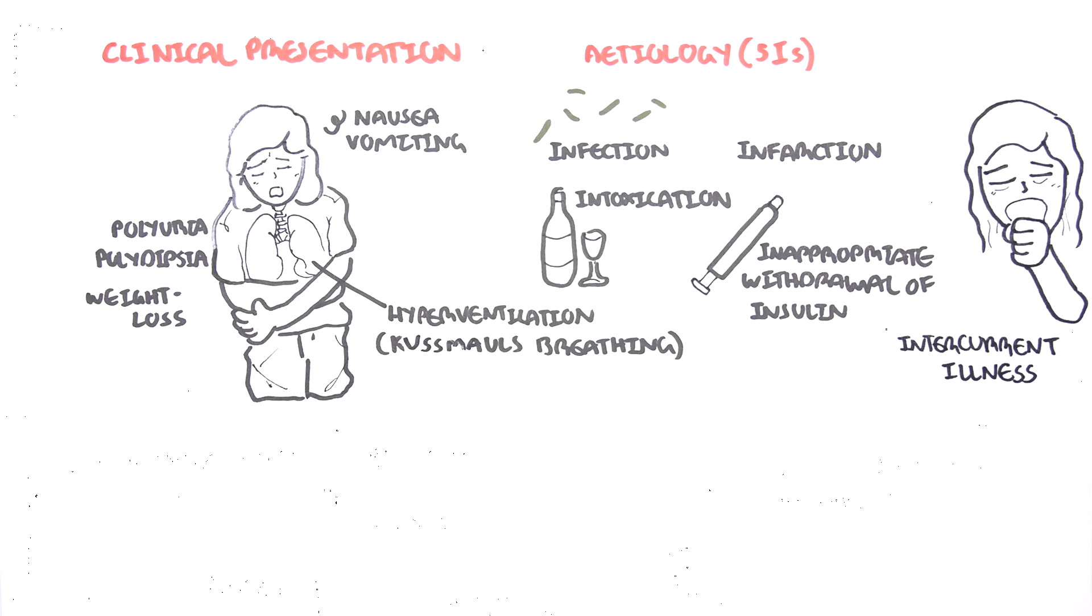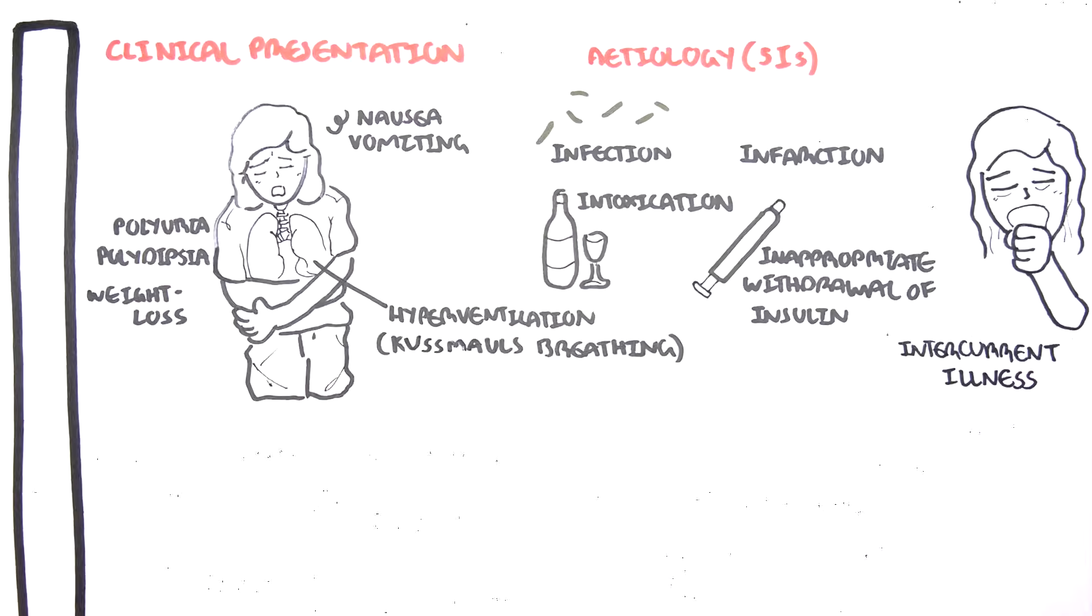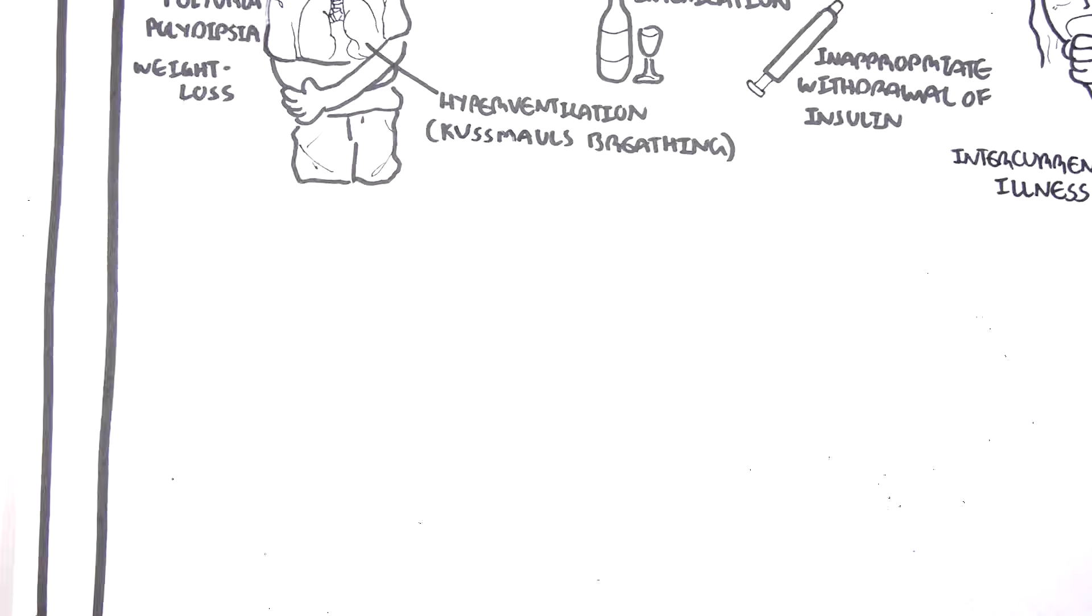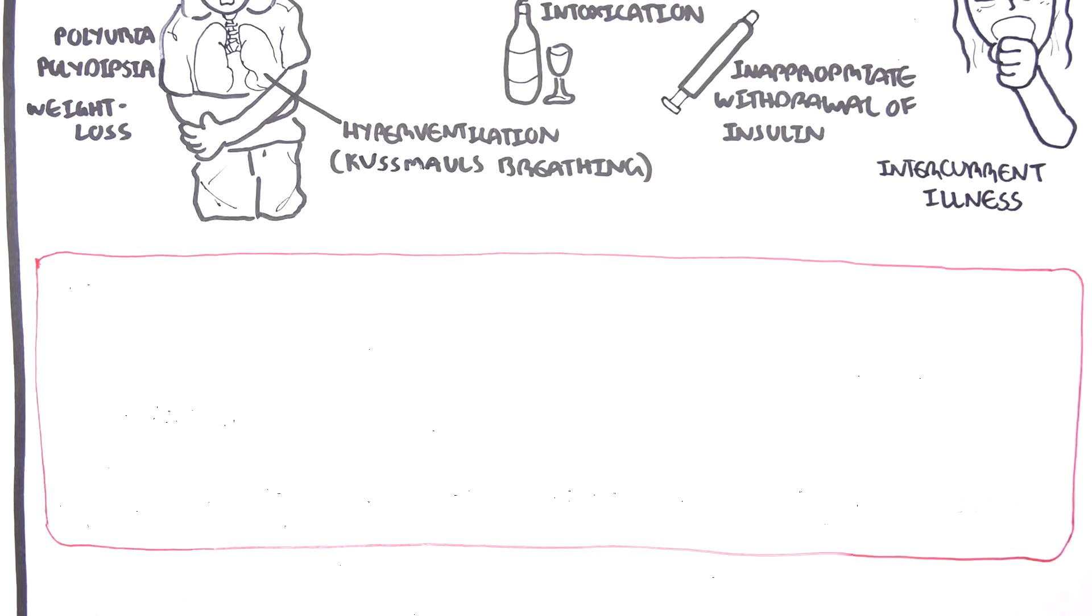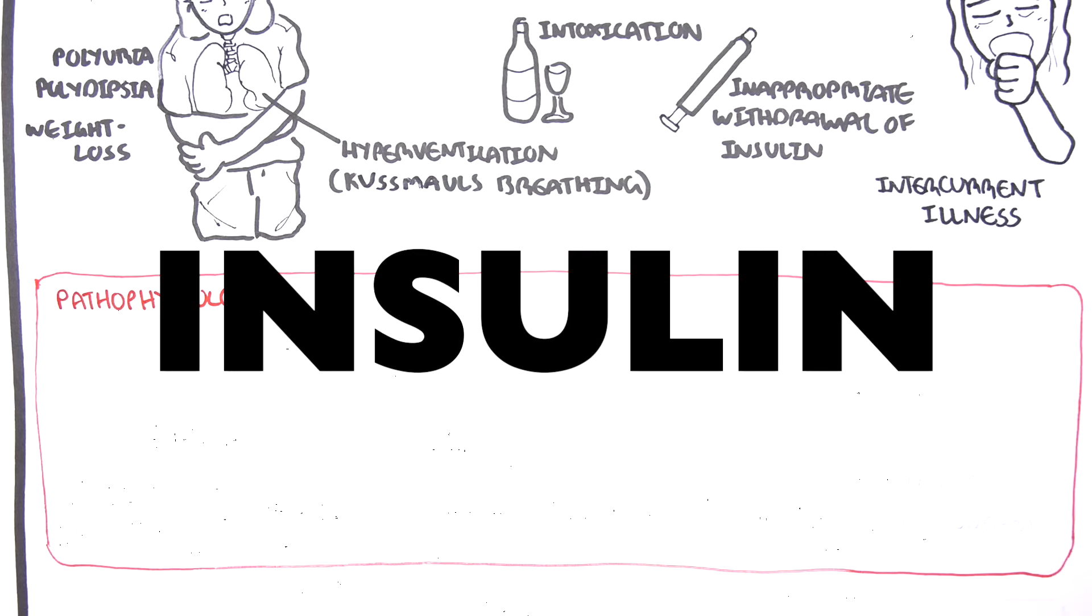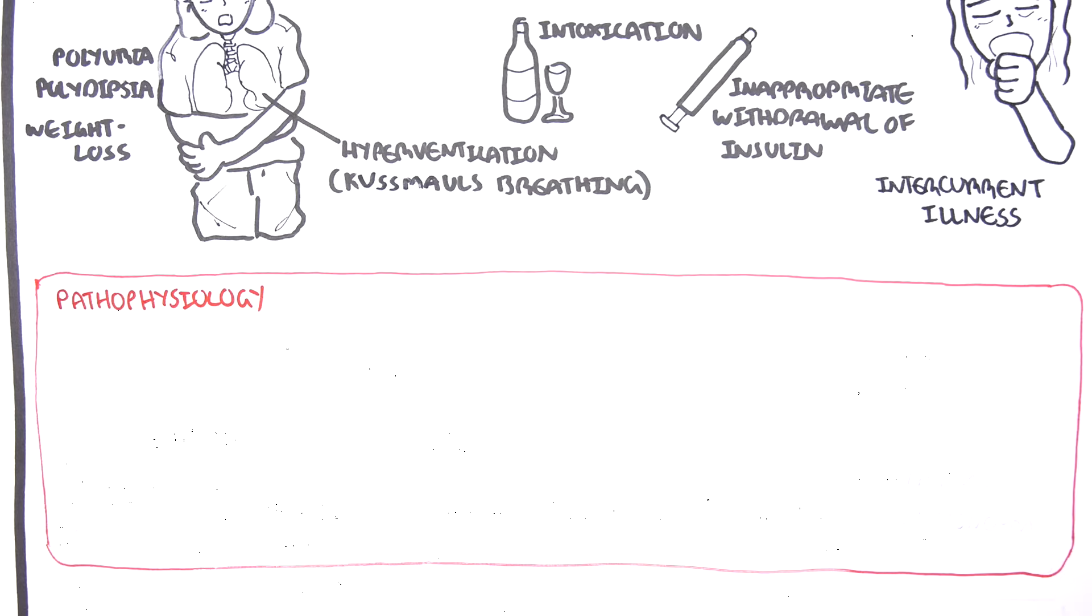And these five triggers, they cause what we know as diabetic ketoacidosis. So let's go into the pathophysiology briefly. If you want to know more about the functions of insulin, watch a video I have on the fed state, which is under biochemistry.